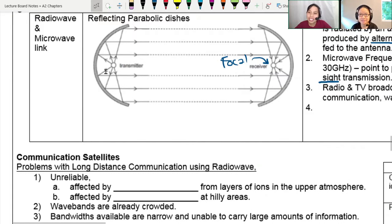So previously we looked a little bit at the radio wave and microwave link, how you can use two parabolic dishes and transmit and receive signals. But then there are problems with that if you are very far away.